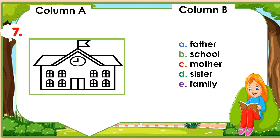Number 7: Look at this picture. What's this? Match this picture with a correct word in column B. A. Father. B. School. C. Mother. D. Sister. E. Family. Write the letter only.